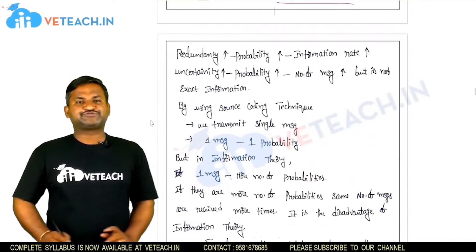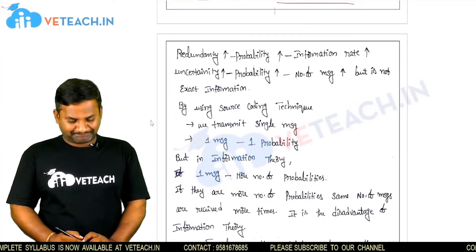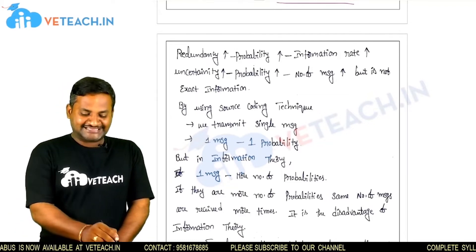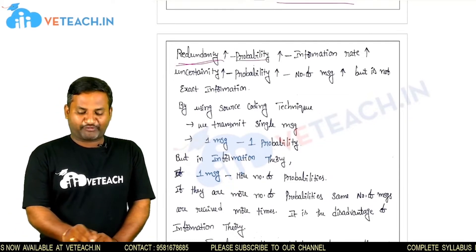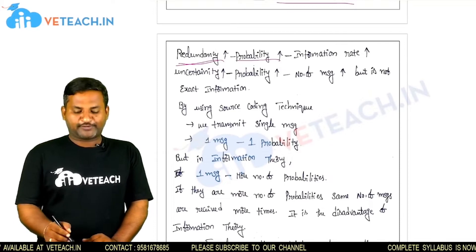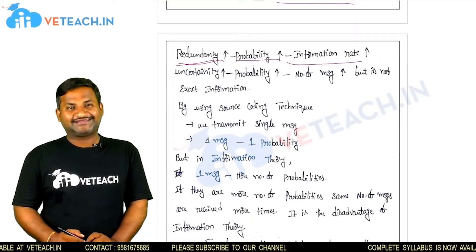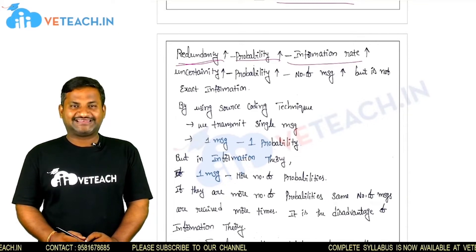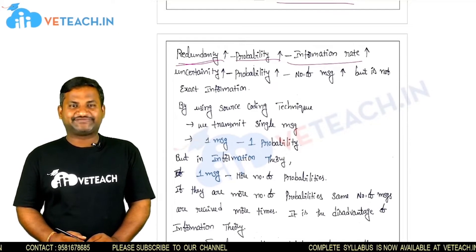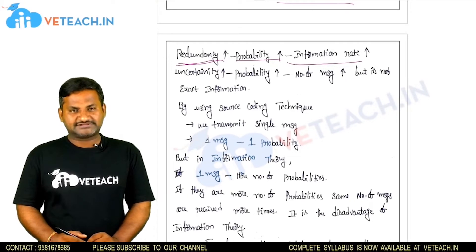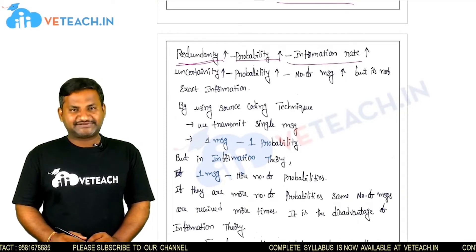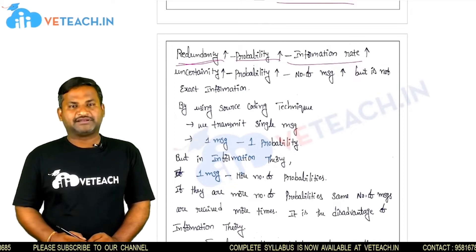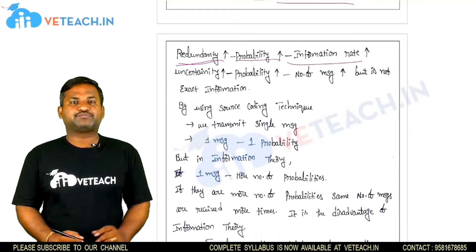Before going to source coding, what is redundancy? How can redundancy be related with respect to probability? If redundancy increases, uncertainty increases and probability also increases. So if probability increases, information rate also increases. In terms of the communication system, we can relate each concept with respect to probability, because the message x is transmitted from the transmitter, and the chance to receive the message at the receiver can simply be related with respect to probability.